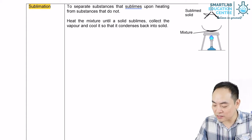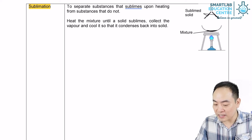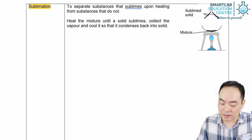When a mixture contains a sublime substance, heating is first carried out to sublime the solid. Collect the vapor produced and cool it with an inverted filter funnel so that the vapor condenses back on the surface of the funnel into the solid.